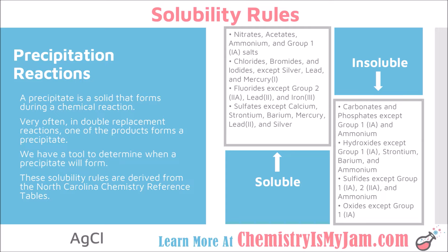Consider another example: silver chloride. Once again, focus on the second ion in the compound — the chloride. The rule about chlorides says they are soluble except silver. Silver chloride is one of the exceptions, so that kicks it over to the insoluble side. Silver chloride is insoluble — it does not dissolve in water. A solid would form, so you would put S for solid as the state of matter.